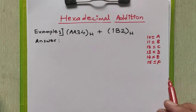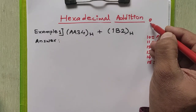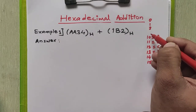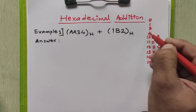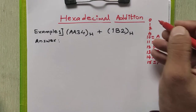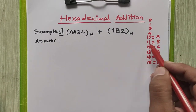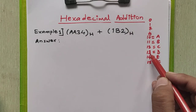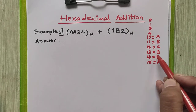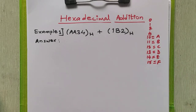So the valid digits are from 0 to 9, after that 10 is A, 11 is B, 12 is C, 13 is D, 14 is E, and 15 is F.